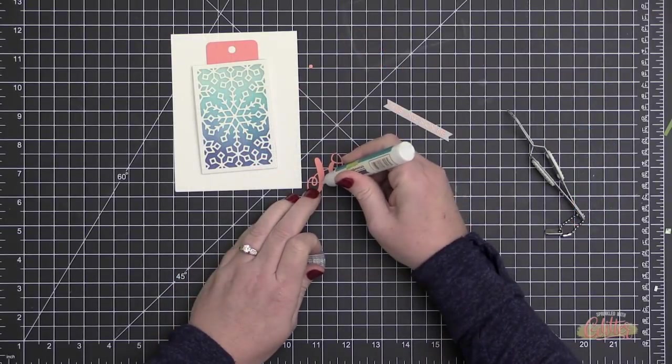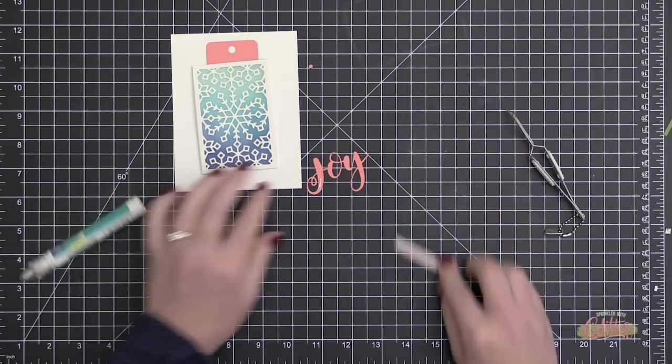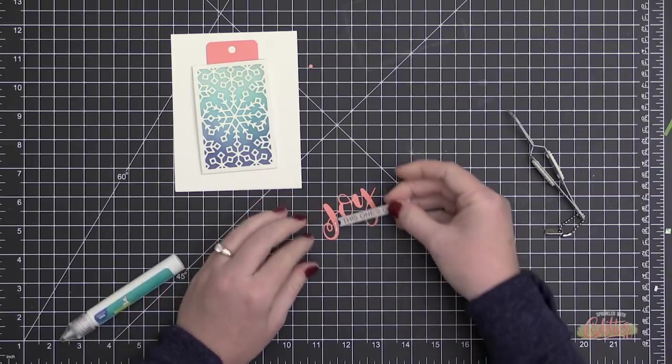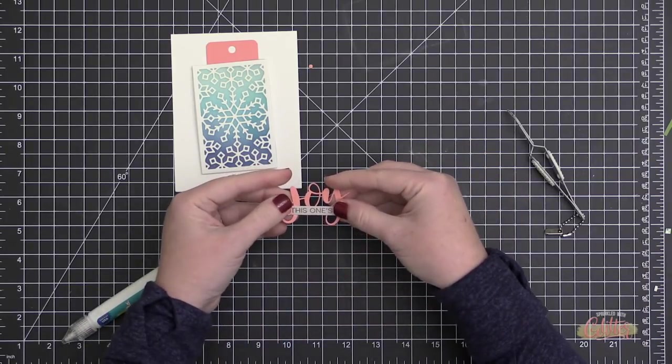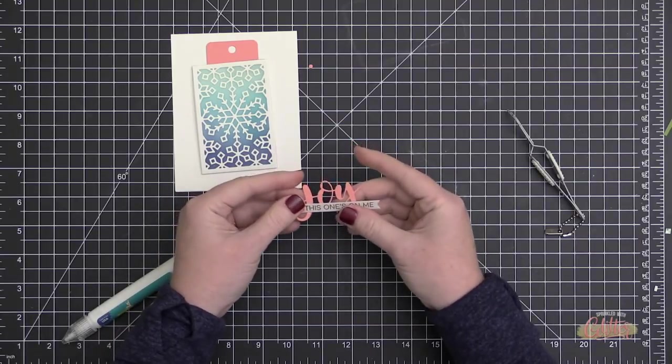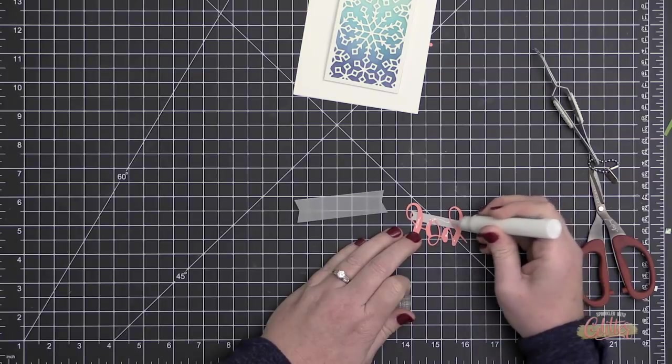So I prepped the surface of my cardstock with a powder tool, I stamped my sentiment in Versamark ink, and then I added some copper—it's actually called Penny embossing powder from Brutus Monroe—and I heat set that.